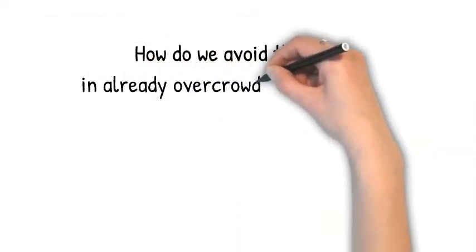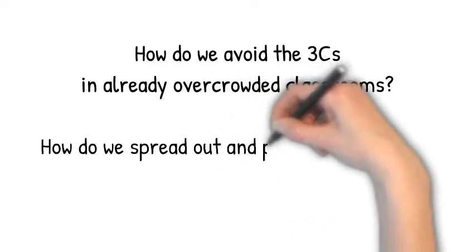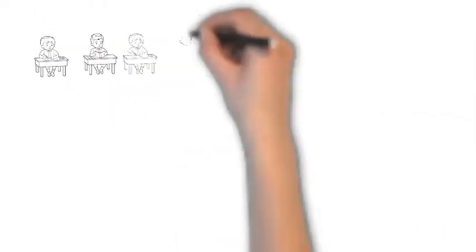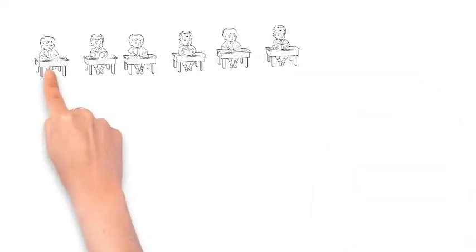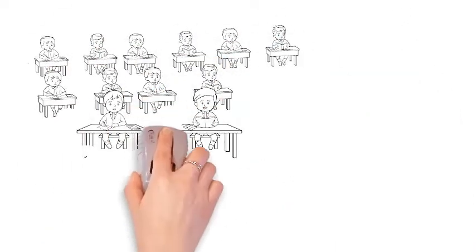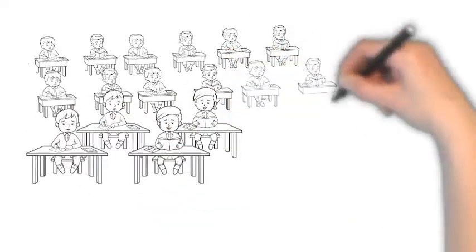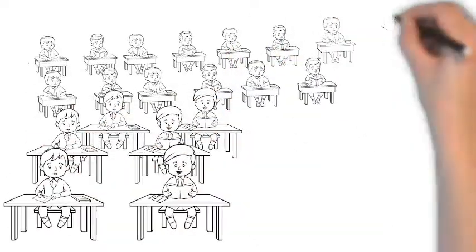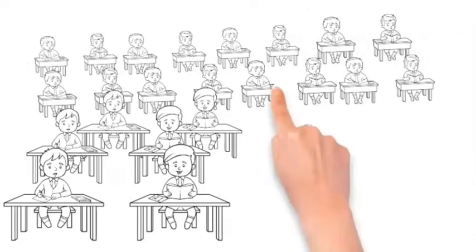How do we avoid the 3 C's in already overcrowded classrooms? How do we spread out and physically distance in classrooms that are already overcrowded? There simply is not enough space in a classroom with 30 children to be able to do two meters of physical distancing between students.